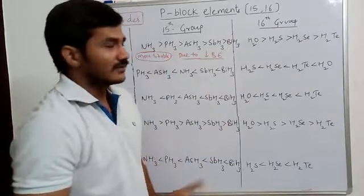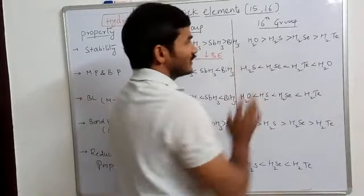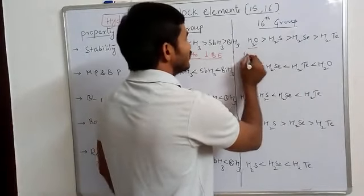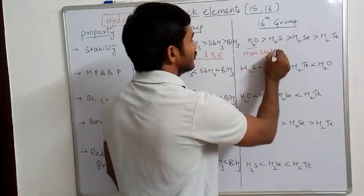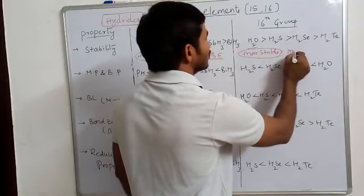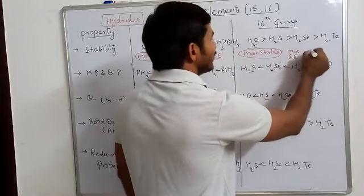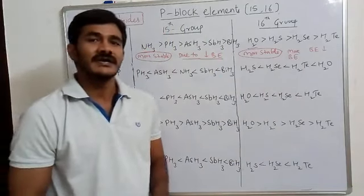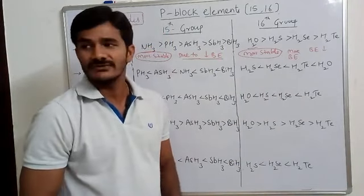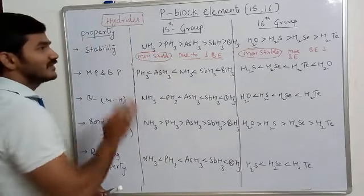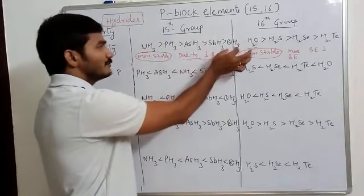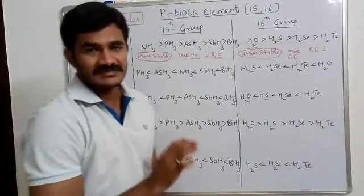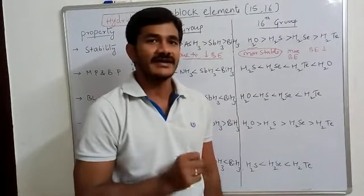For Group 16 hydrides, water is the most stable, for the same reason — more bond energy. As atomic size increases down the group, bond length increases and bond energy decreases, so stability decreases from water to tellurium hydride. Polonium hydride is not discussed as polonium is radioactive.